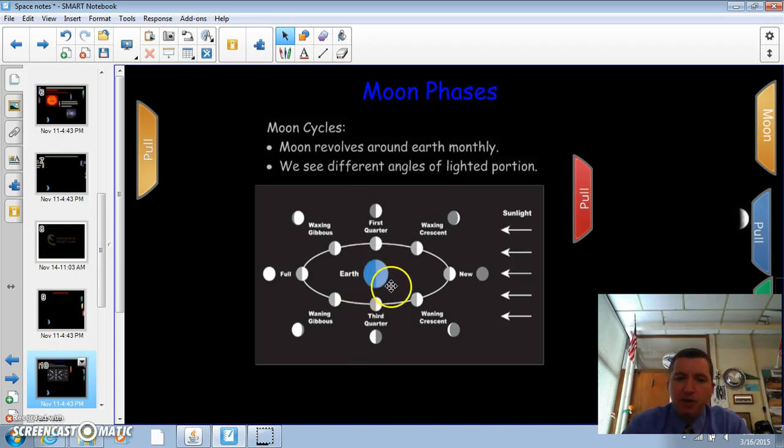So here's Earth. So let's say that you are over here. And the sun is over here. The sun's in the back side of the moon. So what you're going to see is the dark side. So to you, it doesn't look like it's lit up.